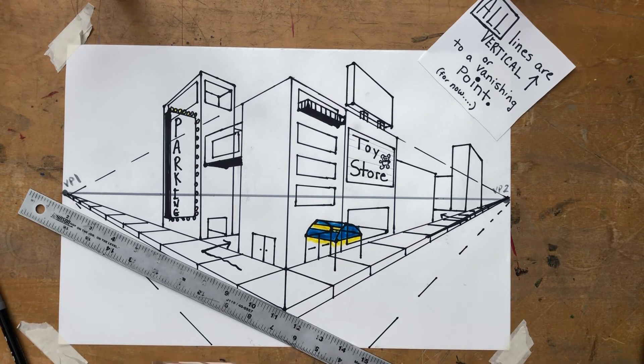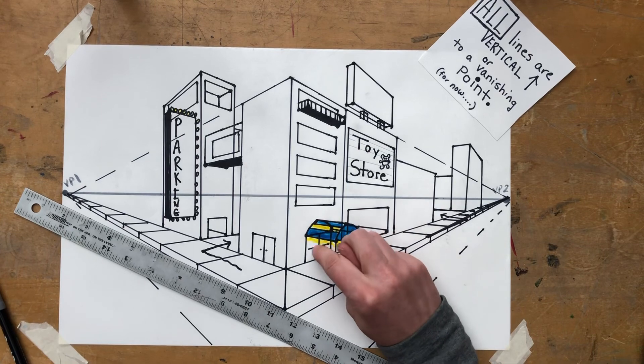Again, all my lines are vertical or to a vanishing point. Right now the only thing I did was curve this line and draw a little bit of details. So that's how you make things pop off of the building.